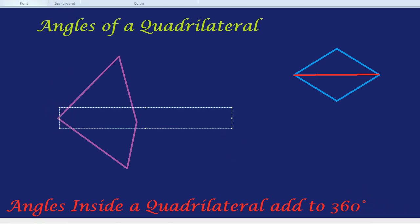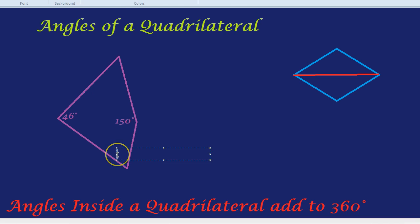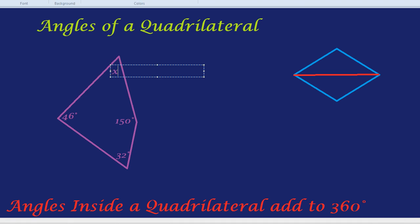Let's draw in a few of those angles. This side, let's call 46 degrees. That angle. The angle on the right-hand side, we can call 150 degrees. And the angle at the base, let's call that 32 degrees. Just to make things complicated. Your challenge is to work out this remaining angle, and let's call him X.